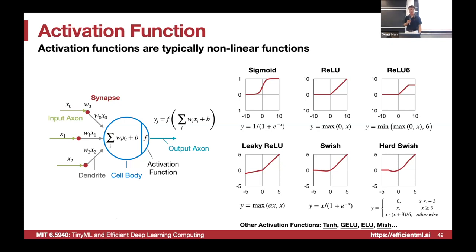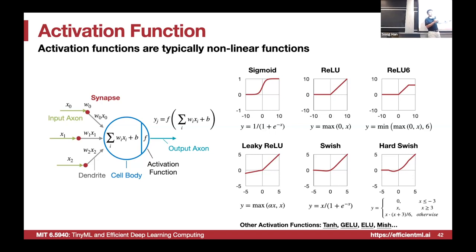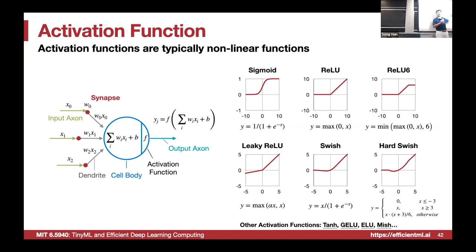Now the activation function. Only if the activation is larger than a threshold does the neuron fire — that's the ReLU activation. To make it easier to quantize, people clip it to a number like 6 (ReLU6). To maintain gradients when input is negative, you can use Leaky ReLU or Hard Swish. A key pitfall is that ReLU is very hardware friendly, but some activation functions are difficult to quantize and not hardware friendly, so unless necessary, avoid hardware-unfriendly activation functions.